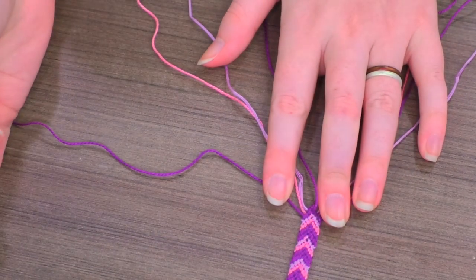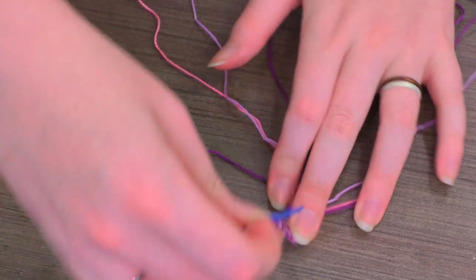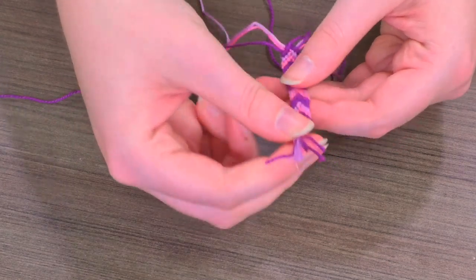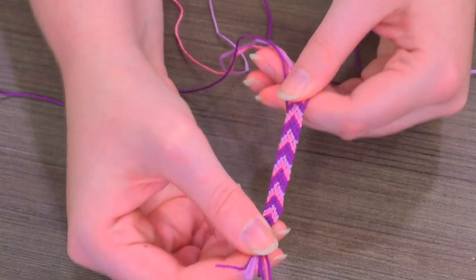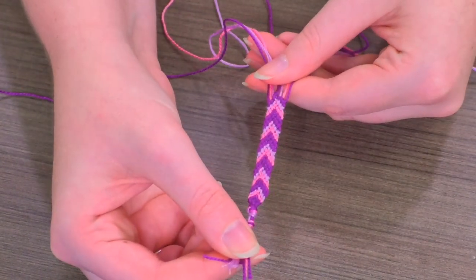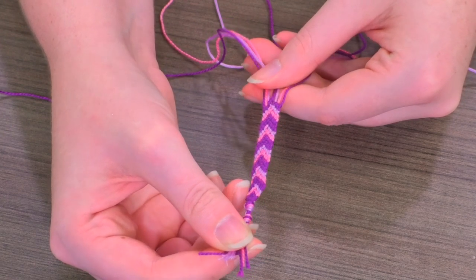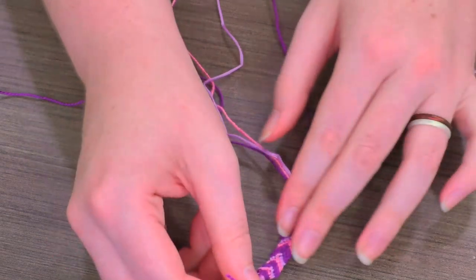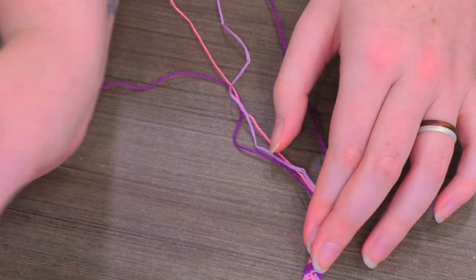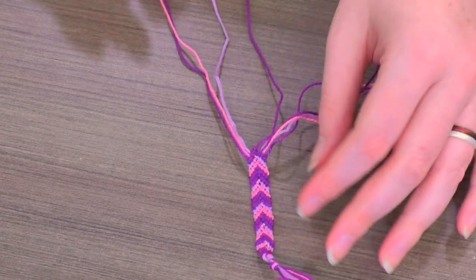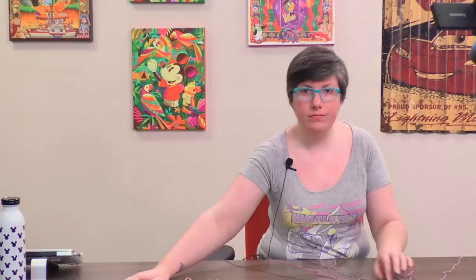There you go. So you can see the setup is the same. I tied them together in a knot. Then you just keep going. You've got your chevron pattern. Once you get in the swing of it, it's pretty easy. Just keep tying those knots and moving your way across and moving your way down. And that's friendship bracelets.